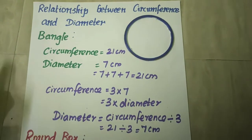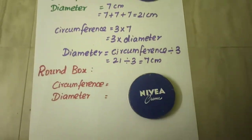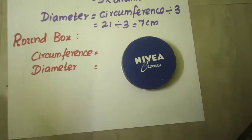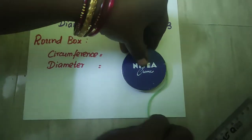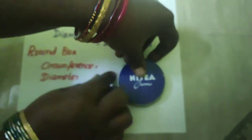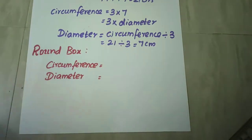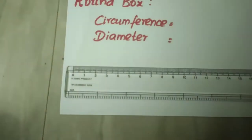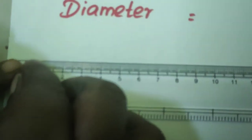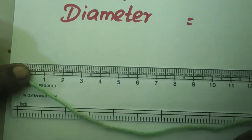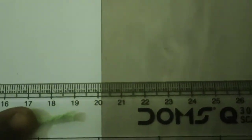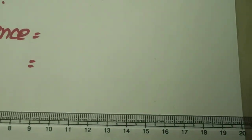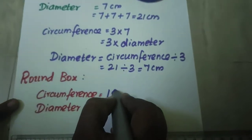Now let us try using the metal box, the same procedure. I have taken a thread and measured. After measuring you take the scale and find out the circumference. Starting from zero, you see where does this point stand? It is at 19. So here your circumference is 19 centimeters.